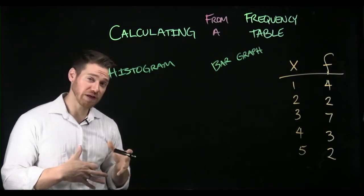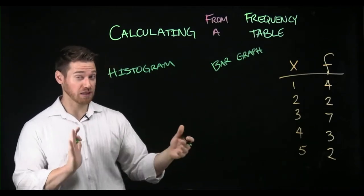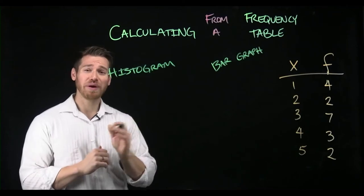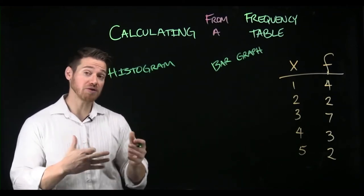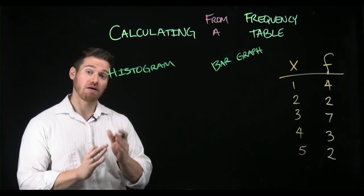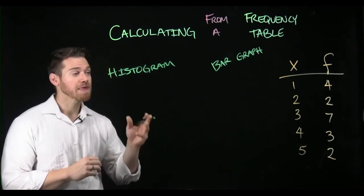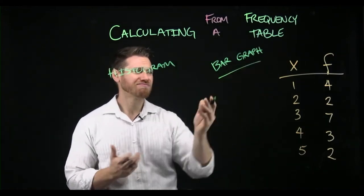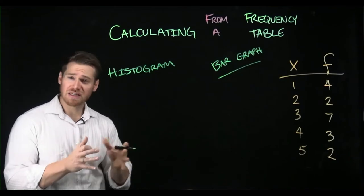If we assume the data is interval or ratio, then it's on a scale, it's on a continuum. If it's on a continuum, we want to represent the continuous nature of that data, and we do that by having no breaks in the x-axis — all of the bars are going to touch across the x-axis. In a bar graph, we're assuming the data is nominal or ordinal, and it exists in discrete groups, so the bars don't touch.